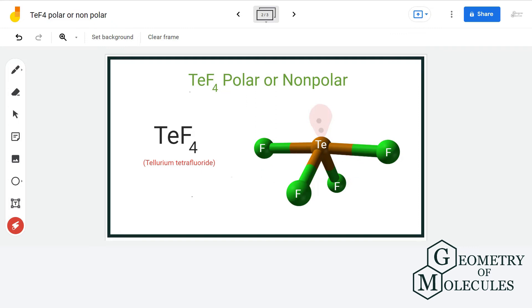Now if we look at the electronegativity values of fluorine and tellurium, fluorine is much more electronegative than tellurium. So the electrons shared between these two atoms will be pushed towards the fluorine atom more.